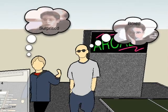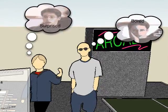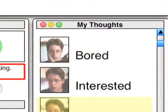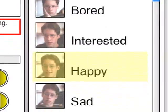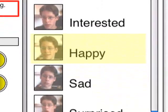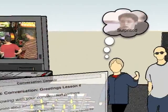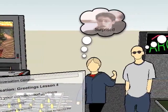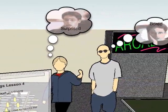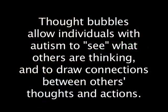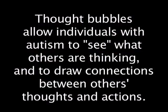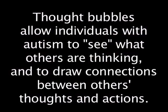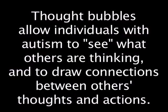Another feature of the conversation console is that it allows users to indicate their thoughts, which are shown in thought bubbles above their avatars. Jonas indicates his thoughts by selecting from a constrained list of choices in the My Thoughts area of the conversation console. After he selects a thought, it is displayed above his avatar's head along with a graphic representative of that thought. Jonas is particularly fond of this feature, as it allows him to see what others are thinking and to draw connections between others' thoughts and actions — a skill that has eluded him in the real world.